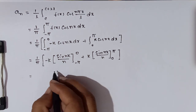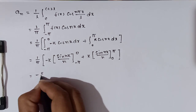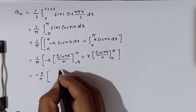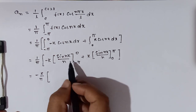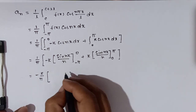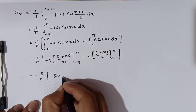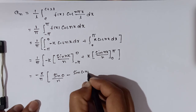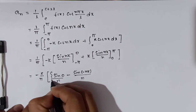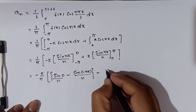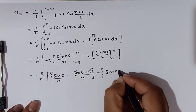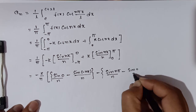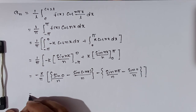Taking -k common, we get -k/π times: applying limits — upper limit gives sin(0) = 0, lower limit gives sin(-nπ)/n. For the second part: upper limit sin(nπ)/n minus sin(0)/n.